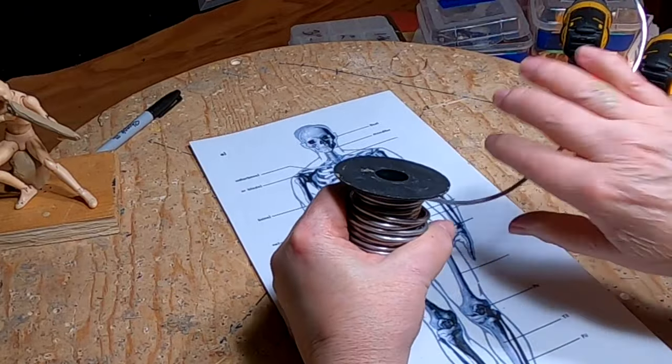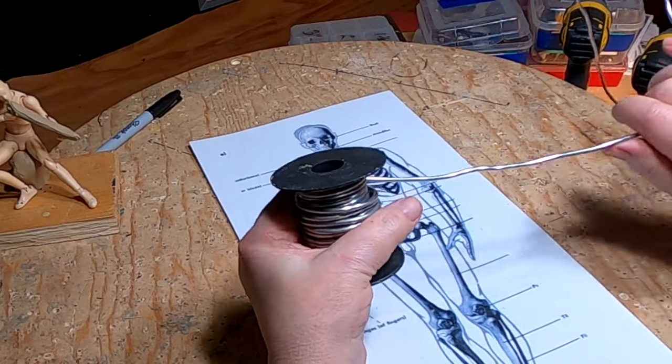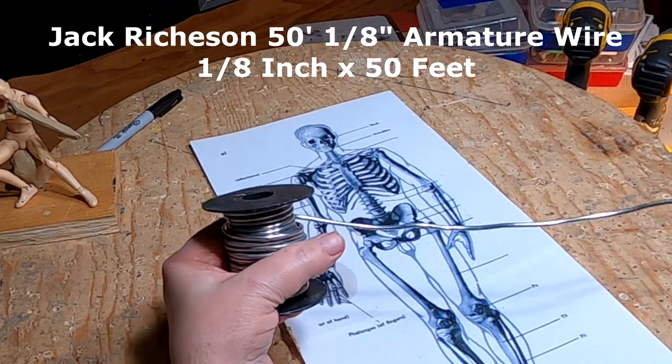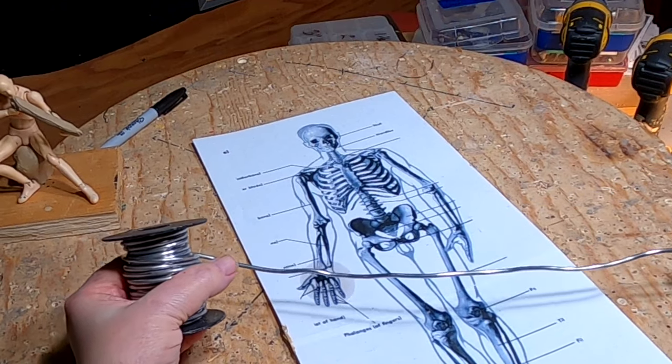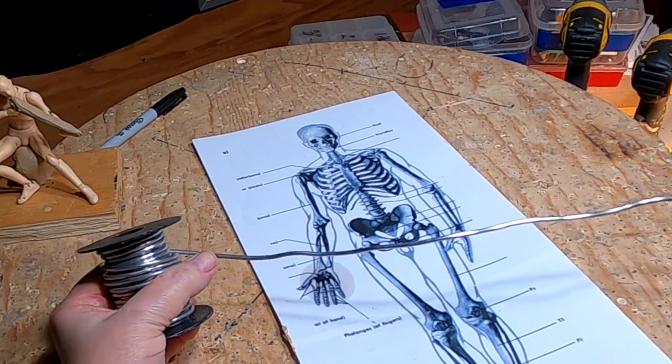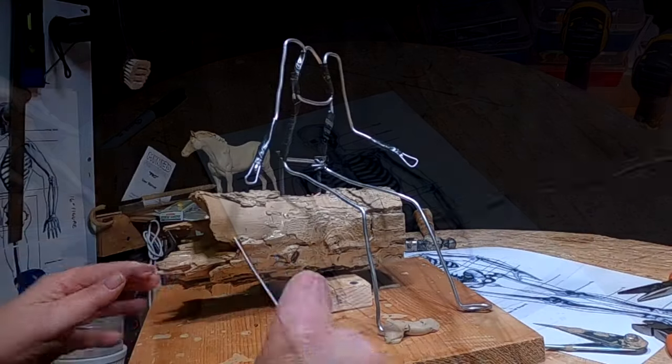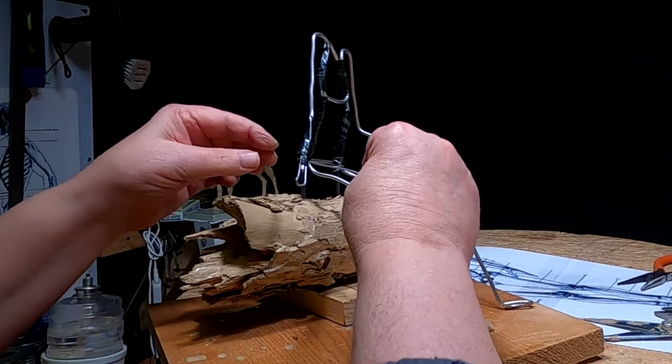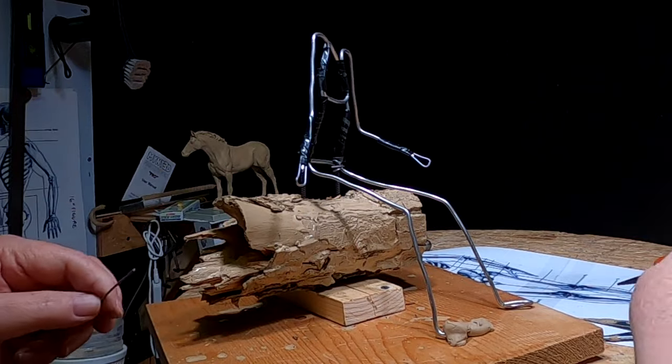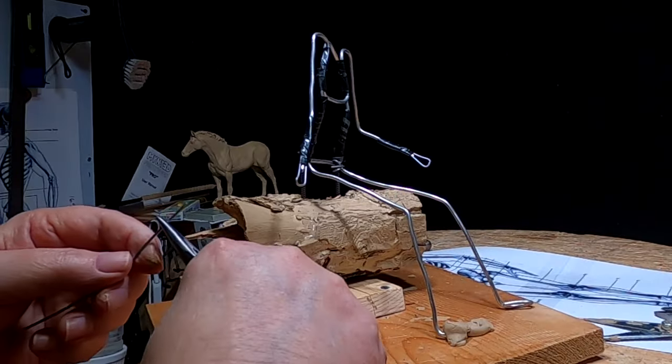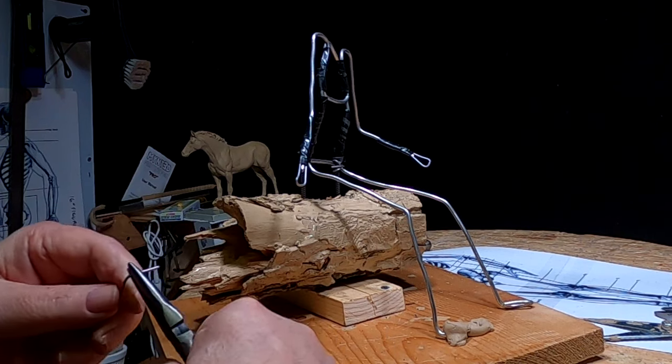And I'll put the product number on there, or you can just look it up on Amazon for armature wire and they've got it listed in there. All right, I'm just anchoring this partial armature. I'm not done making the armature yet, but I'm anchoring it to the log.